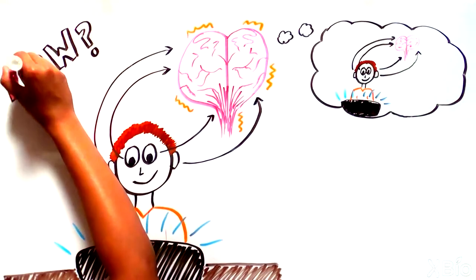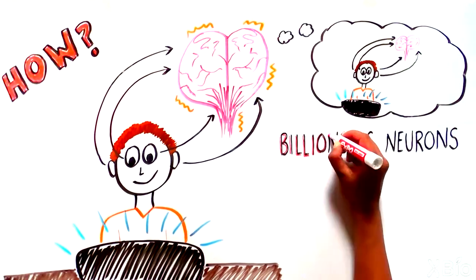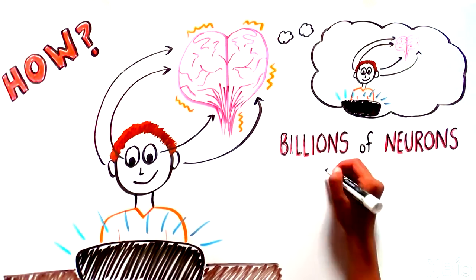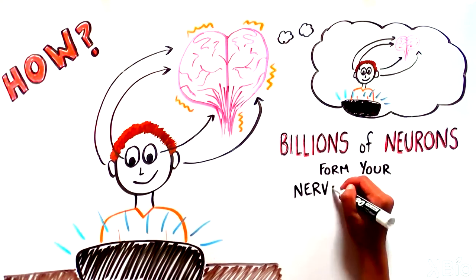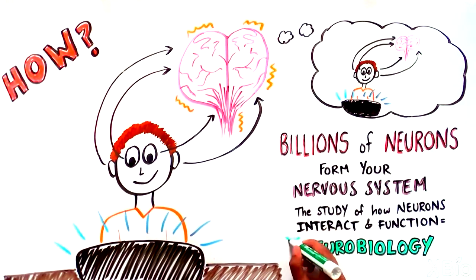The answer is through the action of billions of cells called neurons that work together to form your nervous system. The study of how neurons function and interact so we can see, hear, smell, taste, feel, think and move is called neurobiology.